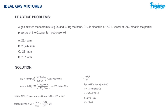If we don't convert to Kelvin, we'll definitely get the problem wrong — our calculator will give us an error. The conversion is simply degrees Celsius plus 273.15. We also have a volume of 15 liters. Plugging all values into the ideal gas equation, we get a partial pressure of 0.281 atmospheres.